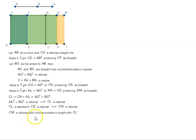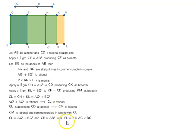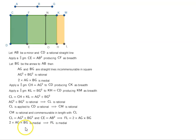CM is rational and commensurable in length with CD. Now CL equals AG² + BG² and CE equals AB², so the remainder FL equals 2·AG·BG. Why? Because AG² + BG² equals AB² + 2·AG·BG. And 2·AG·BG is medial — not because it is given, but because it is a property of the minor with its annex.